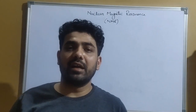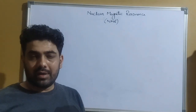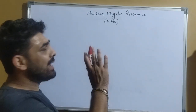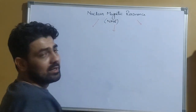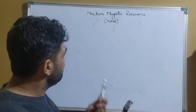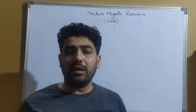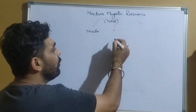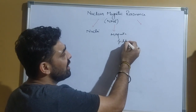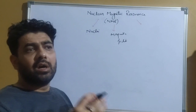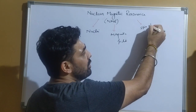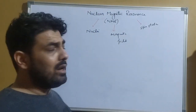Welcome to today's video lecture. Today we will be discussing NMR, which stands for Nuclear Magnetic Resonance. The term is comprised of three words: 'nuclear' because it is useful in case of certain nuclei; 'magnetic' because we use a magnetic field in this process; and 'resonance' because it shows resonance between two different spin states of the nuclei.